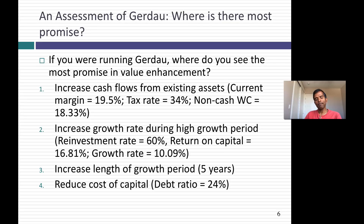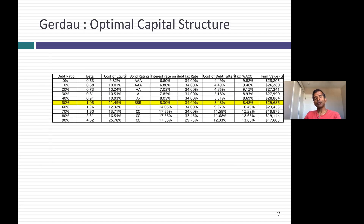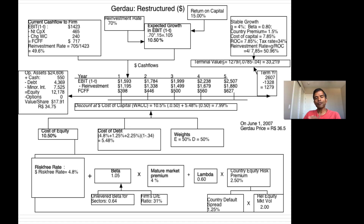Their reinvestment rate is about 60% and their return on capital is about 16.8%, well above the cost of capital. I've used a five-year growth period because this is a big steel company in a mature business. The most obvious place to start is the debt ratio — I wanted to see whether the 24% debt ratio could be increased to lower the cost of capital. I looked at the optimal debt ratio for Gerdau by changing the debt ratio from 0% to 90%, adjusting the cost of equity and cost of debt consistently. Based on my assessment, Gerdau's cost of capital is minimized at a 50% debt ratio. So I raised the debt ratio to 50%, which lowered my cost of capital.